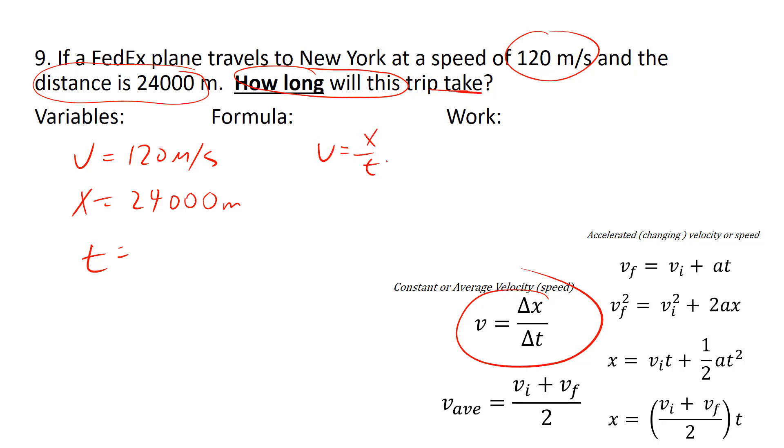V equals X over T. And then when you plug in the numbers, 120 equals 2,400 over T. T is in the denominator, so you're going to actually have to multiply it out. We'll get rid of T, and now we have this 120 we don't want. We're going to divide out the 120. So T ends up equaling 24,000 divided by 120, which equals 200 seconds.